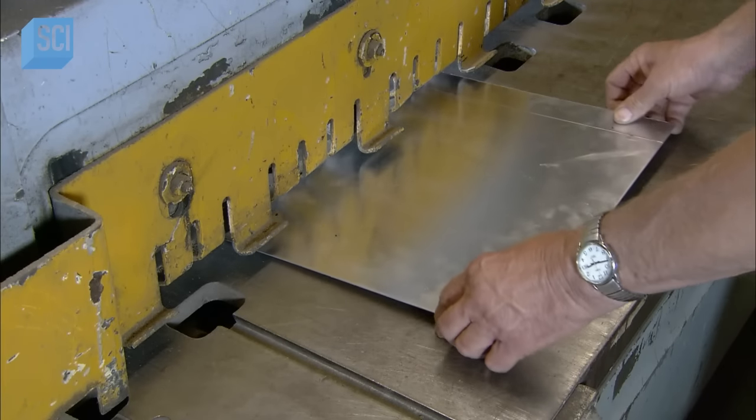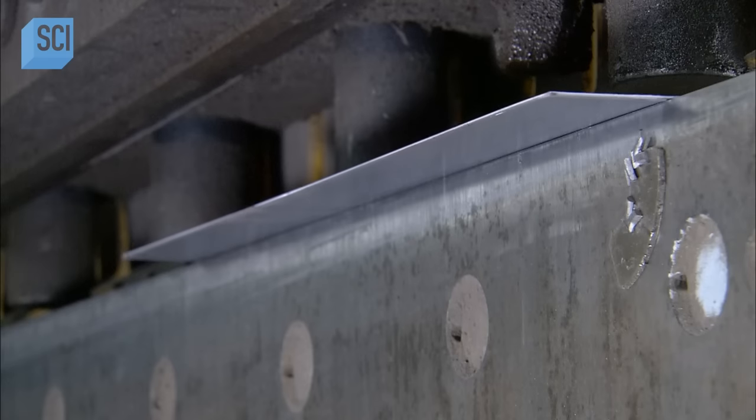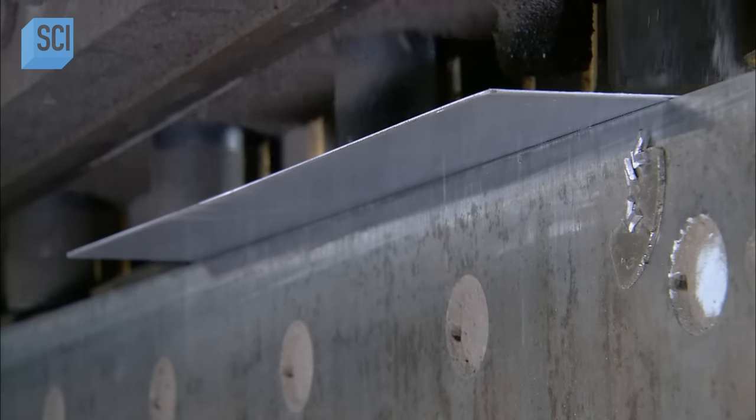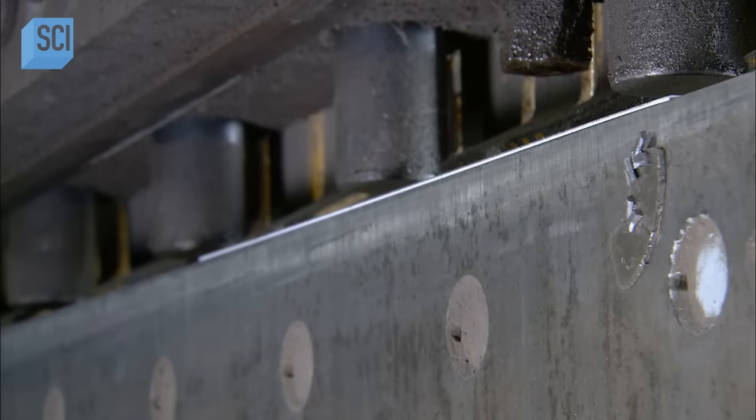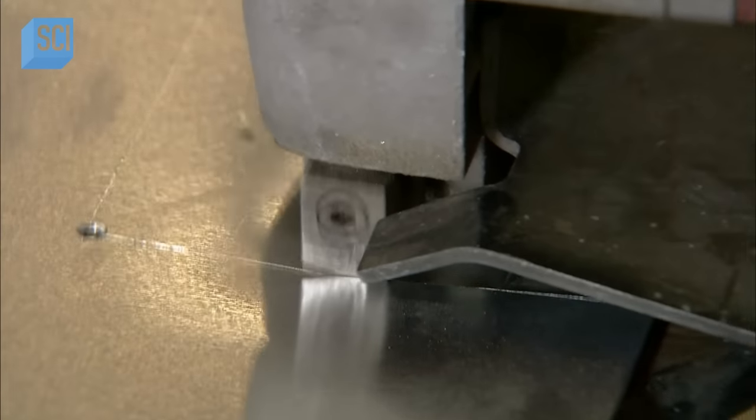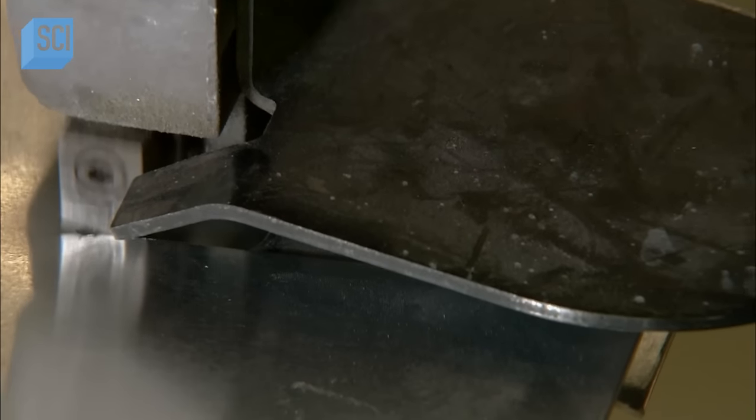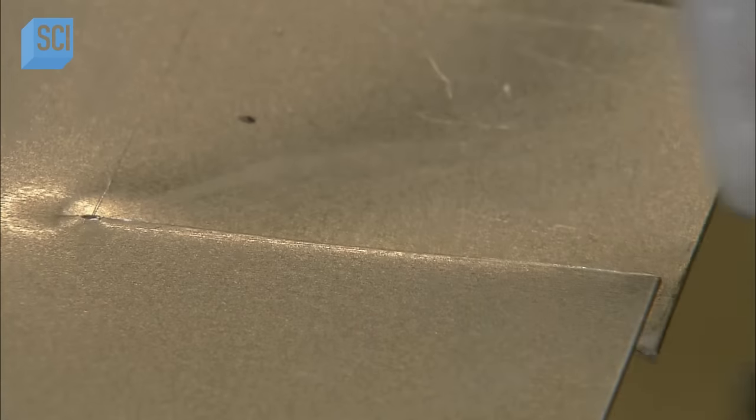Next, using a shear press, he lobs off a piece of an aluminum sheet. He switches to a hand tool and cuts out a geometric shape with flaps.